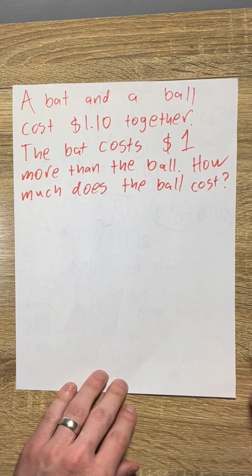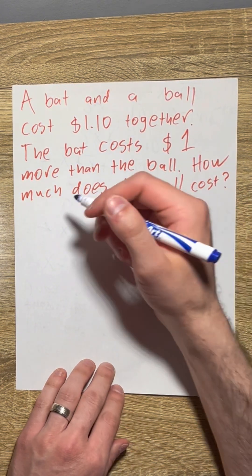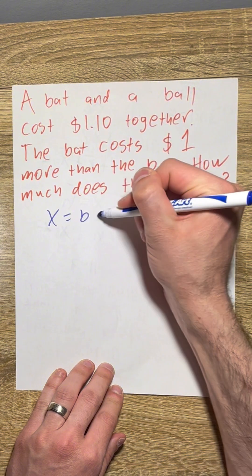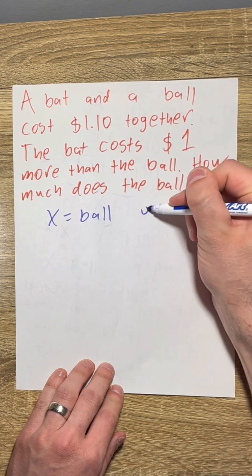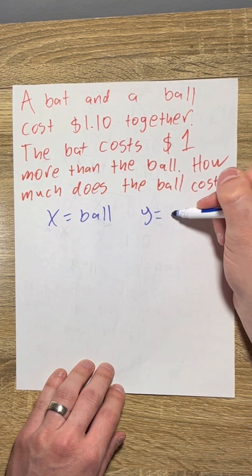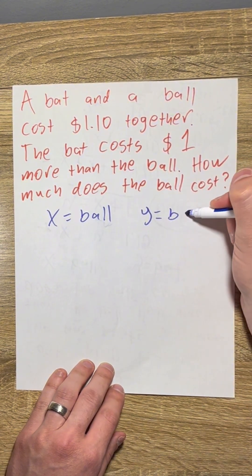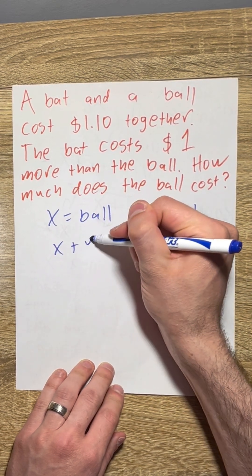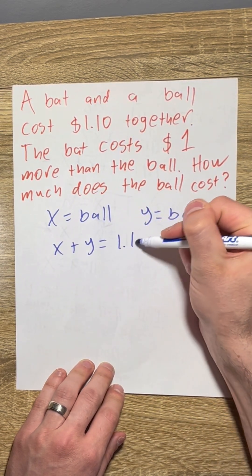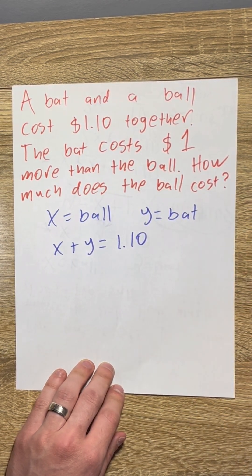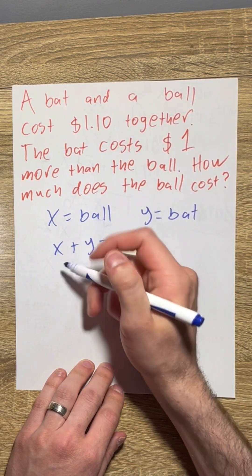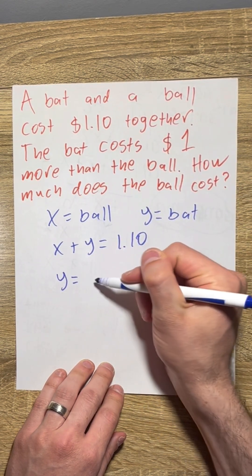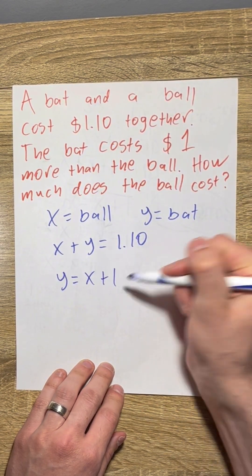So one way we can solve this is using algebra. Let's say x is equal to the price of the ball, and y is equal to the price of the bat. Together they equal $1.10, so x plus y equals $1.10. The bat is $1 more than the ball, so y equals x plus 1.